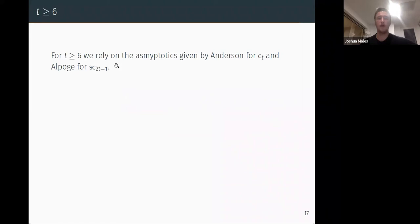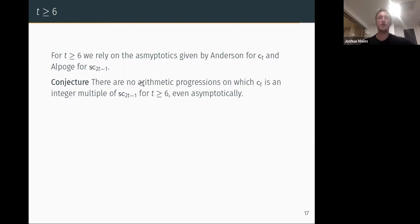So what happens if I take t greater than 5? Well, for this we rely on these asymptotics that I mentioned by Anderson and Albuquerque for CT and SC(2t-1). Here's our conjecture: there are no arithmetic progressions on which CT is an integer multiple of SC(2t-1), even asymptotically, for basically all t. So we believe that t equals 4 is the only case this happens, a very special case.